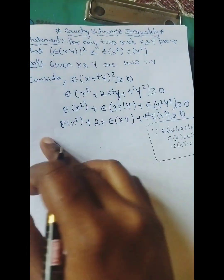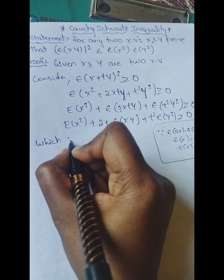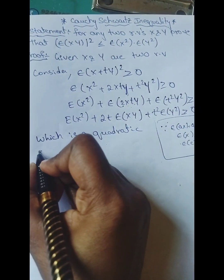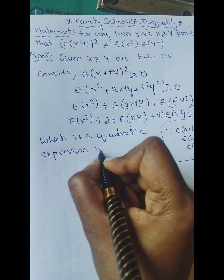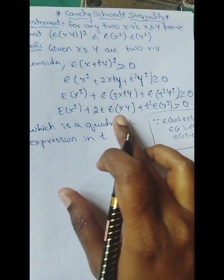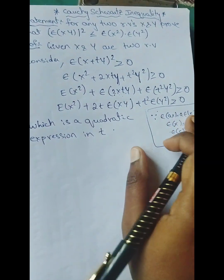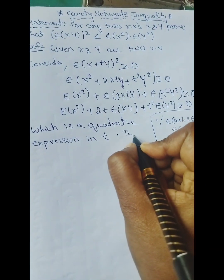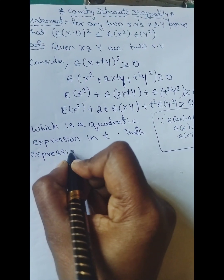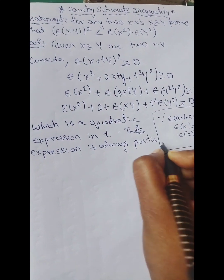Now, what does this represent? It is in the form of a quadratic expression in terms of t. This expression is always positive since it is greater than or equal to 0, meaning it is not negative.